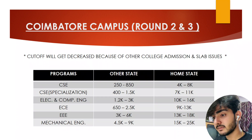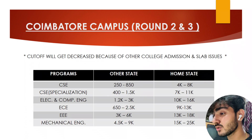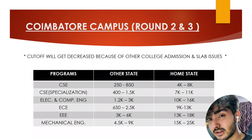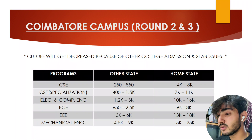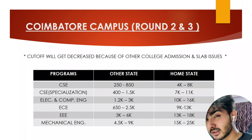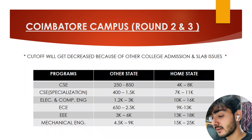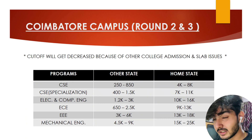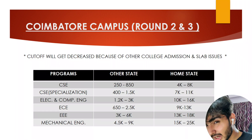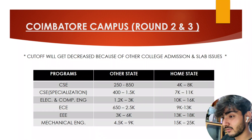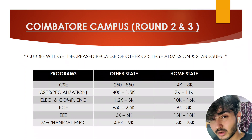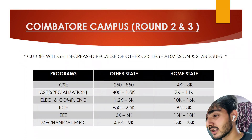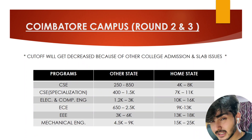Now let's see the cutoff rankings for the main Coimbatore campus. For Computer Science for other-state students, the ranking range is 250 to 850 — where 250 is around round two and 850 is the last rank for round three. For home-state students it is 4,000 to 8,000. For CSE specializations, the other-state rank is 400 to 1,500.